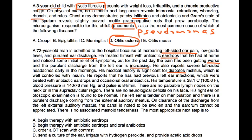Vitals: temperature 38.1, BP 140/76, pulse 84. No palpable lymph nodes and no neurological deficits on the face. Right ear is normal. The left ear is tender on manipulation with purulent discharge from the external auditory meatus. After clearing the discharge, the canal is swollen, the eardrum cannot be appreciated, and there is no mastoid tenderness. The question asks for the most appropriate next step.